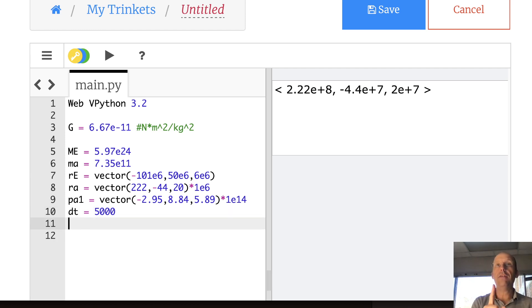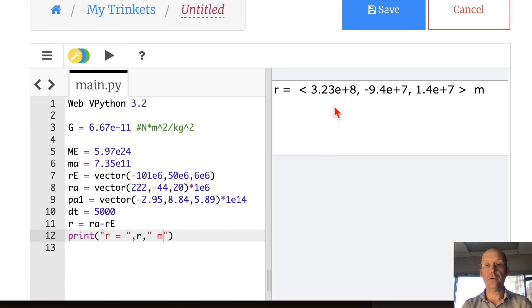So let's calculate F net and then we'll update the momentum. I need R first. R is just like we said before, RA minus RE. And I'm going to print that just so you can see that it does indeed work. Print R equals R and I'll put the units meters. There you go. That's the vector from the earth to the asteroid.